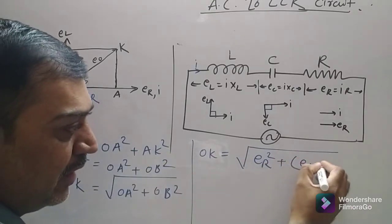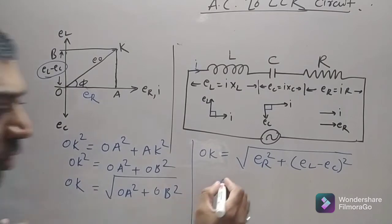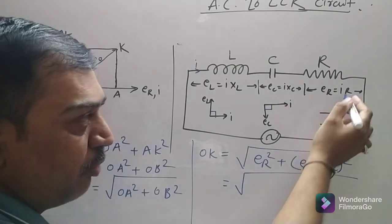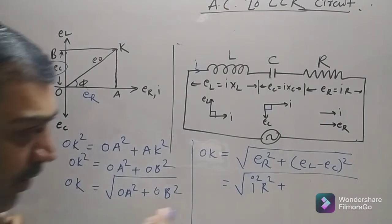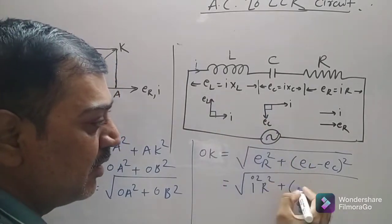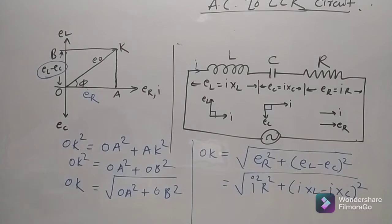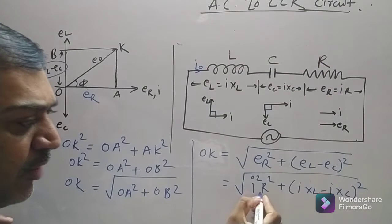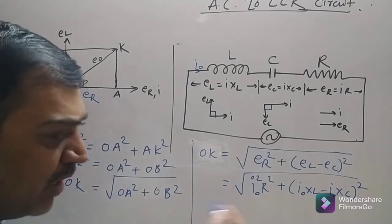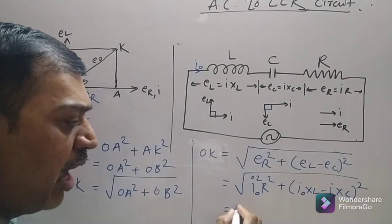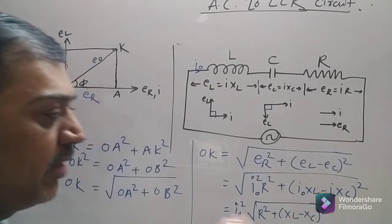Using Ohm's law and substituting ER = i·R, EL = i·XL, EC = i·XC, we get OK = √(i²R² + (i·XL − i·XC)²). Taking i₀ (peak current) common: OK = i₀·√(R² + (XL − XC)²).